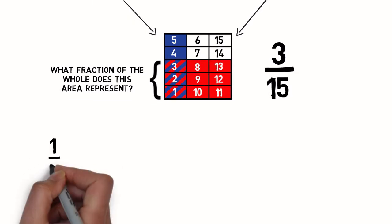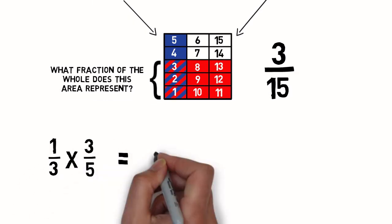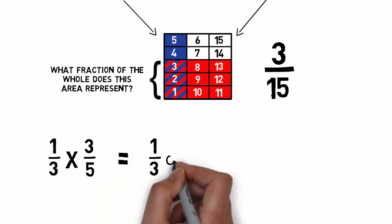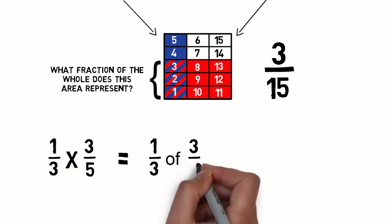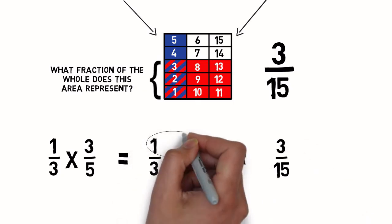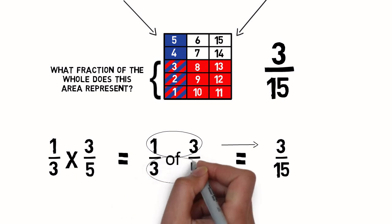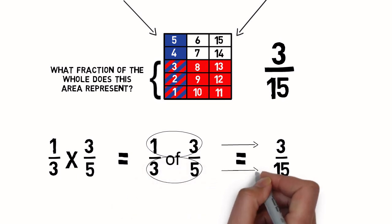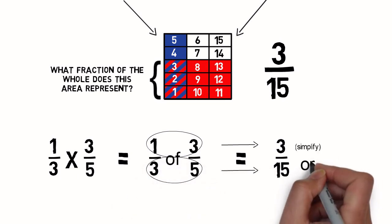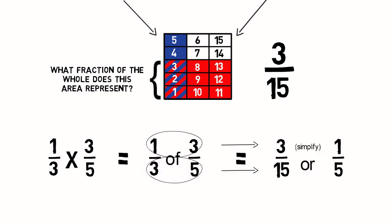So one-third times three-fifths, or one-third of three-fifths, is equal to three-fifteenths. Let us check: one times three is three; three times five is fifteen. Three-fifteenths simplifies to one-fifth.